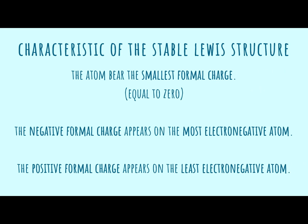After we calculate the formal charge on each atom, the most stable or most plausible structure is one where atoms bear the smallest formal charge, the negative formal charge appears on the most electronegative atom, and the positive formal charge appears on the least electronegative atom. In this video, I will show you how to use the formula and guide you on how to determine the most plausible Lewis structure.